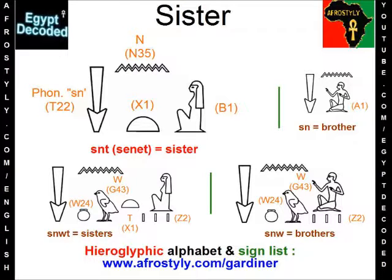This time we are looking at the word sister, which is senet. Remember last time we dealt with the word for brother, which is sen, and you can see it on the right. The only noticeable difference is the T, and the Gardiner sign list reference is X1 — it's always in brackets for those who have not followed. And this letter T, this sound T, usually denotes the feminine.